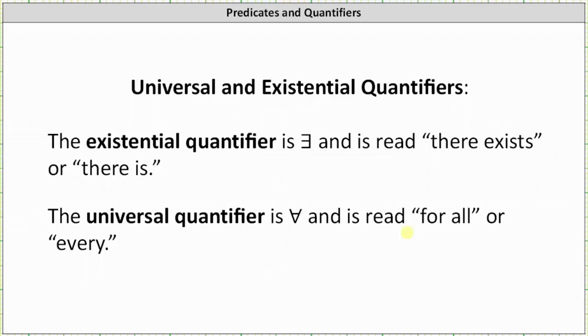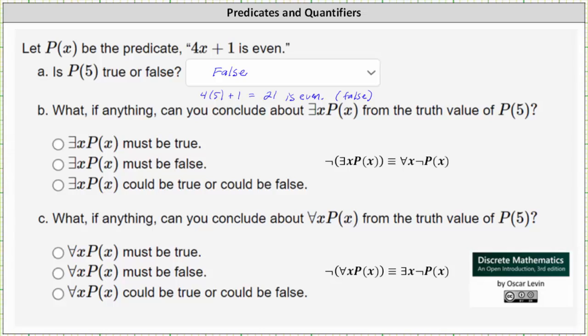So now going back to our question for part B: what, if anything, can you conclude about there exists an x such that P of x is true, meaning there exists an x such that 4x plus 1 is even, from the truth value of P of 5? Well, we know P of 5 is false, but we still don't know whether there exists an x such that 4x plus 1 is even because we are not given the domain of discourse, meaning we don't know what values to consider for x. And therefore, there exists an x such that 4x plus 1 is even could be true or could be false.